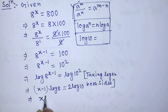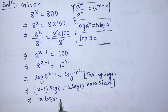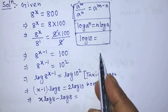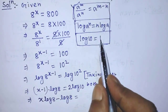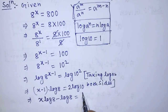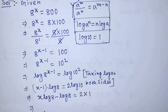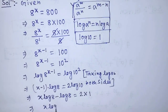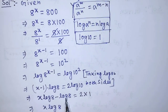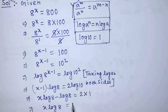We can write from the left hand side: x times log of 8 minus log of 8 is equal to — since we know that log of 10 is equal to 1, we get from the right hand side 2 times 1, which is 2. So it will be x times log of 8 is equal to 2 plus log of 8, after transposing minus log of 8 from the left hand side to the right hand side.